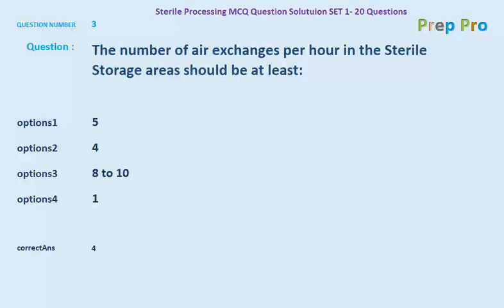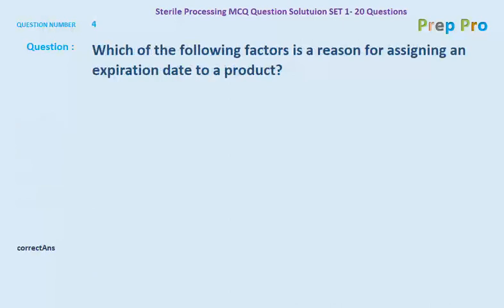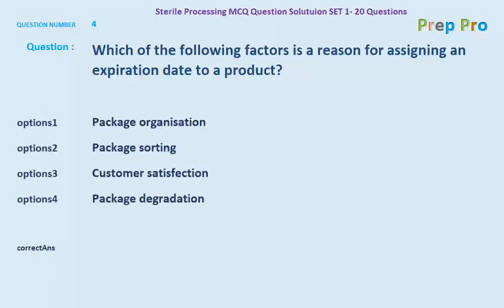Question number four: which of the following factors is the reason for assigning an expiration date to a product? The options are: package organization, package sorting, customer satisfaction, and package degradation. We use the expiration date to ensure the package does not get degraded past that date, so the correct answer is option four — package degradation.